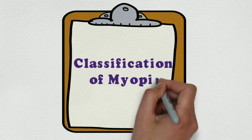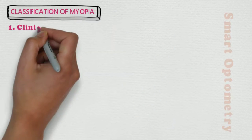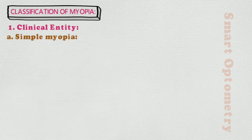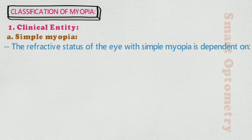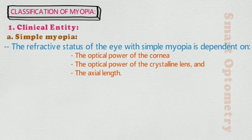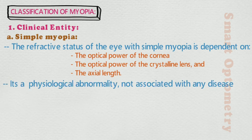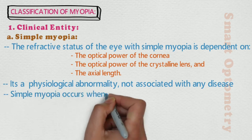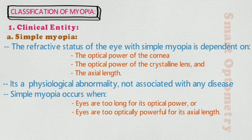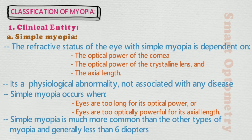Classification of myopia. Let's start. 1. Clinical entity. A. Simple myopia: the refractive status of the eye with simple myopia depends on the optical power of the cornea, the optical power of the crystalline lens, and the axial length. It is a physiological abnormality not associated with any disease. Simple myopia occurs when eyes are too long for their optical power, or eyes are too optically powerful for their axial length. Simple myopia is much more common than other types and is generally less than 6 diopters.